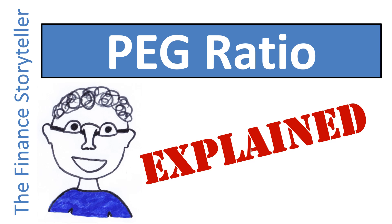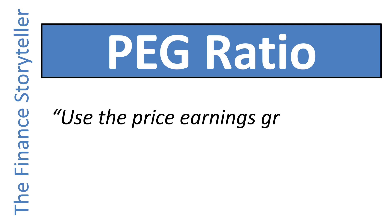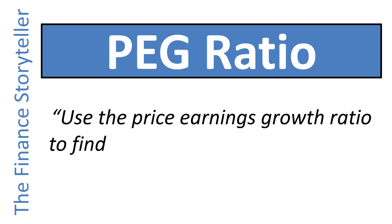What is the PEG ratio? The PEG ratio is an investing rule of thumb that has been around for decades. The aim is to use the price-earnings-growth ratio to try to find growth at a reasonable price.